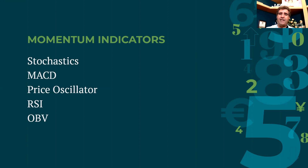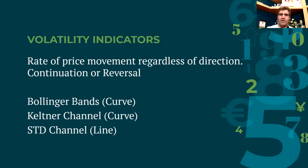Momentum indicators are very popular and include stochastics, MACD, the price oscillator, RSI (relative strength index), and on-balance volume. These are all very good indicators for momentum, keeping you on the right track by telling you whether momentum will continue or whether we're getting tired.